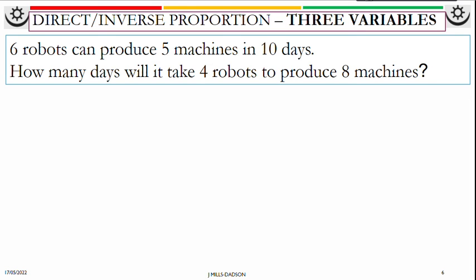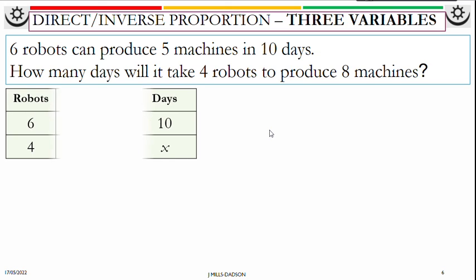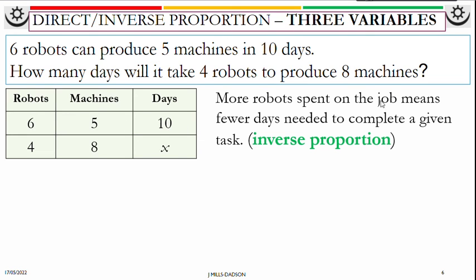Last one. What about the combination of direct and inverse proportion? Six robots can produce five machines in 10 days. How many days will it take four robots to produce eight machines? Put robots, machines and days into a table form. So four is robots. Eight is machines. So days is what we don't know. So we're going to see days and machines relationship and days and robots relationship. More robots spent on a job means fewer days needed to complete a given task. So that's inverse. So we know days going up, robots must go down.